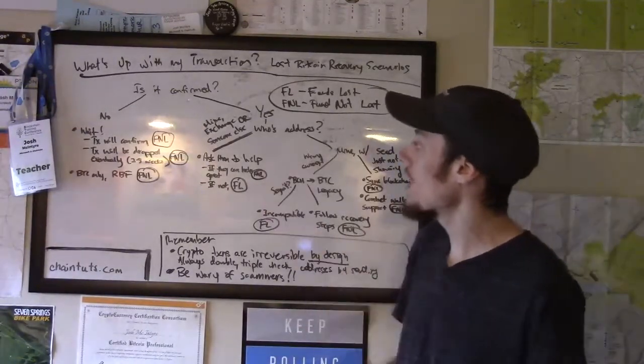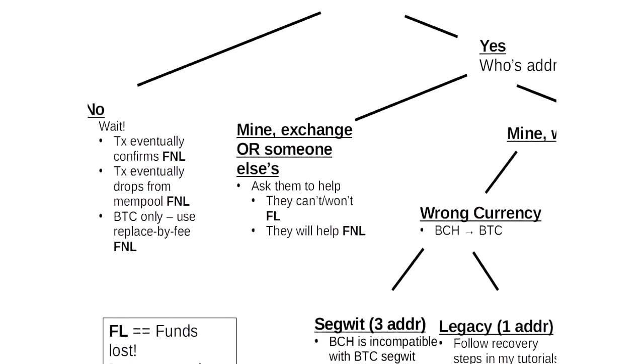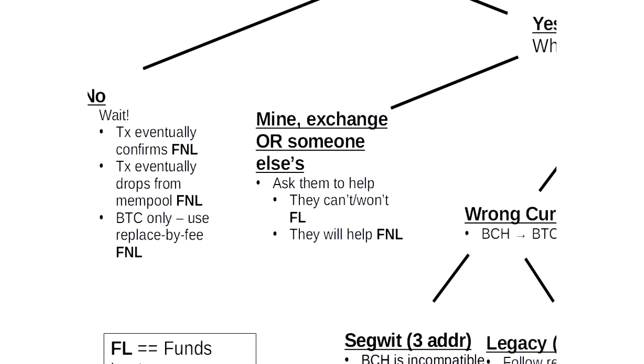The first scenario is I sent to an address that is my wallet, but it belongs to an exchange or I sent to somebody else's wallet, perhaps by accident. So one really common example I see with this is people that accidentally send Bitcoin cash or another Bitcoin fork to a Bitcoin BTC address.